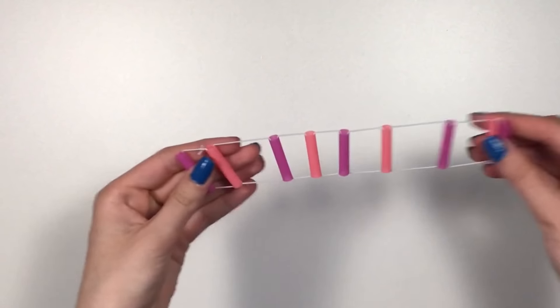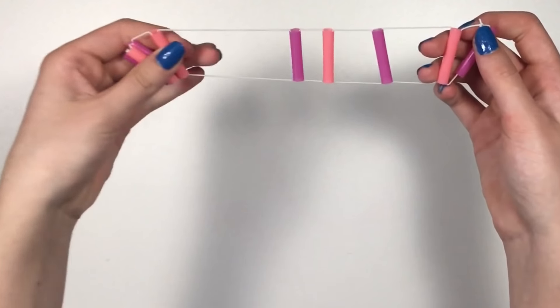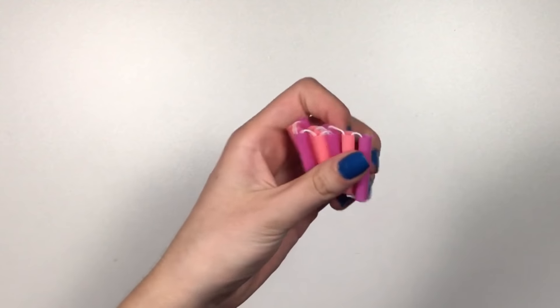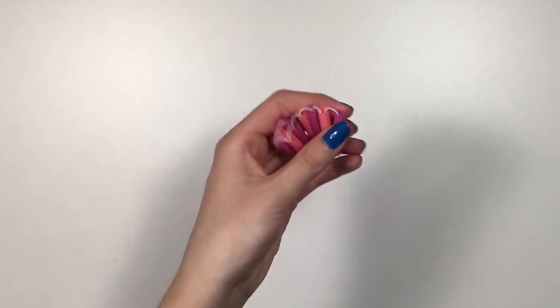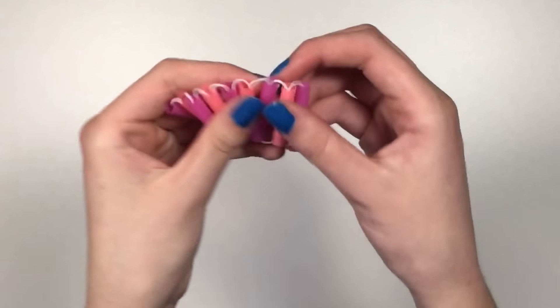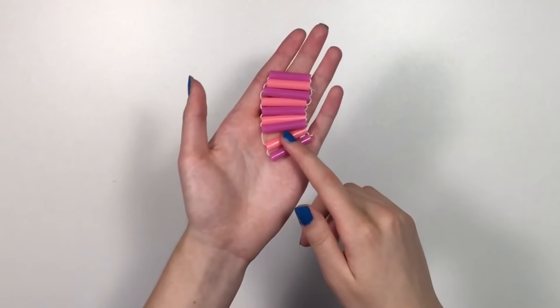Now your tangle fidget is all complete. What I love to do with it is you can move around the straws, that is super satisfying, and also just roll it around in your hand like this. Overall, I really enjoyed this fidget and I'd highly recommend making it.